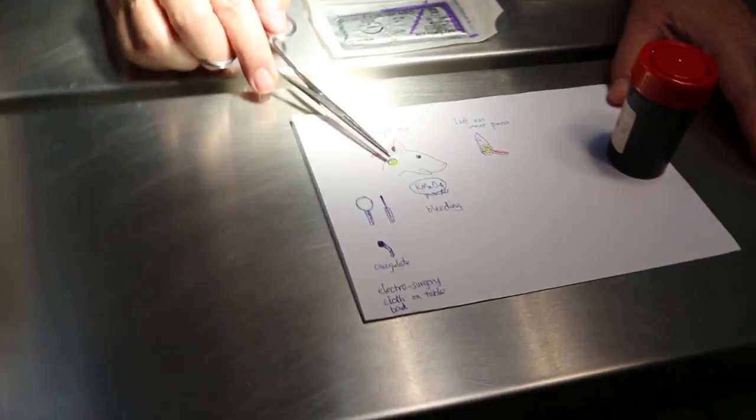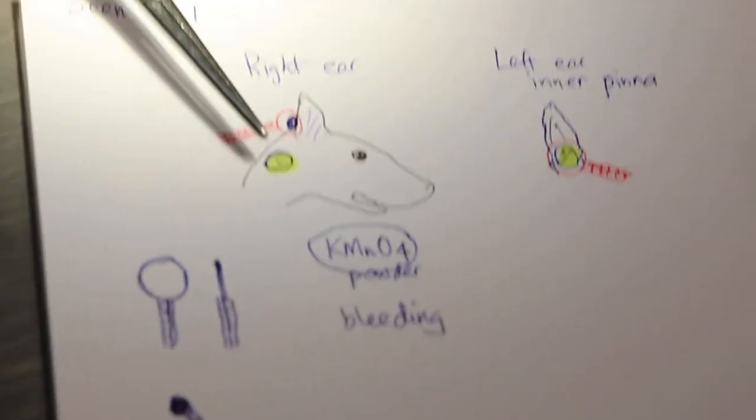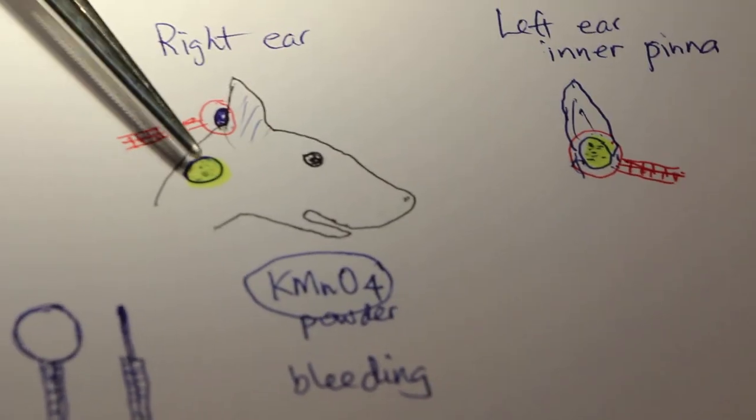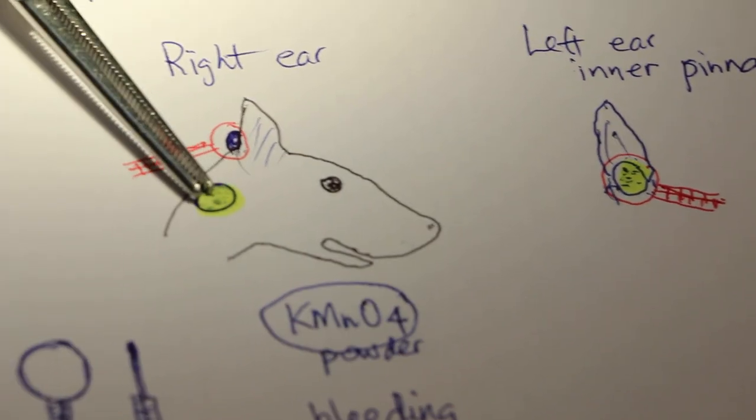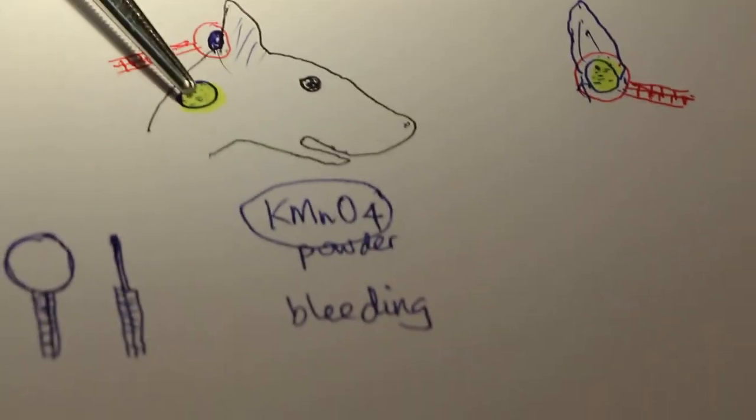This is the one which the vet prescribed anti-fungus, antibiotics, anti-inflammatory and of course it doesn't work because this wound wouldn't heal. Because it's an exposed lump.